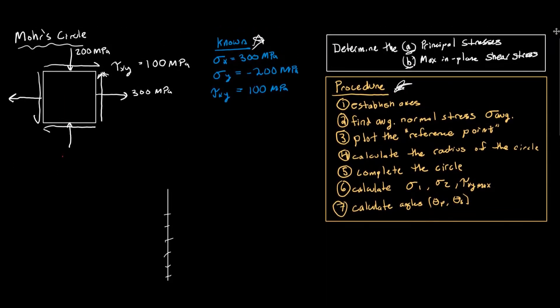The next thing is we want to find the average normal stress. The reason we want to find the average normal stress is because that's where the center of our circle is going to be on our x-axis. We're just averaging the two: it's going to be (300 + (−200)) / 2, and our average normal stress is going to be positive 50 megapascals.